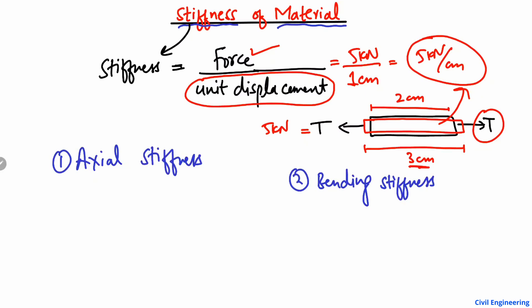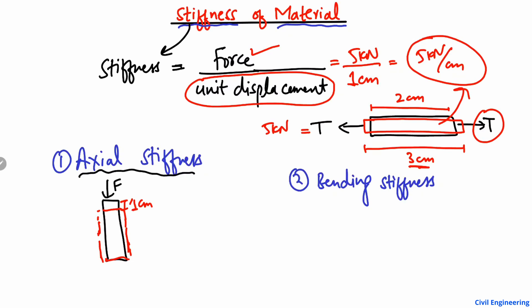These two are very different from one another. Axial stiffness mostly occurs in members like columns and trusses. If I consider a column and apply a force on it, it will show some deformation. When it produces a unit displacement, it gets compressed to a new dimension — for example, one centimeter of deformation in the column. The force required to produce a unit deformation in this case is known as the axial stiffness.